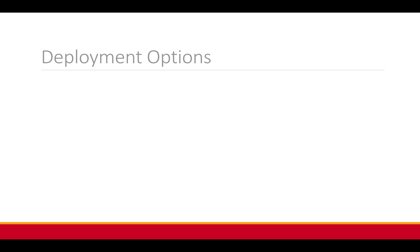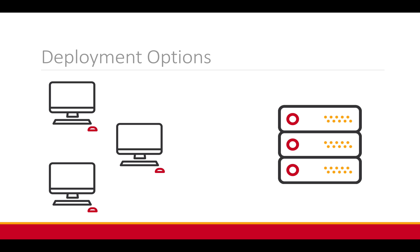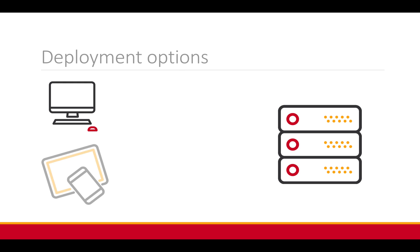The FM credit card plug-in can be deployed client-side or server-side. With client-side deployments, you will need to install the plug-in on each computer that will be processing credit cards. A server-side integration only requires the plug-in to be installed on the server and can be used by anyone connecting to the server. You also have the ability to process credit cards on any device via FileMaker Pro, Go, WebDirect, and custom web publishing.